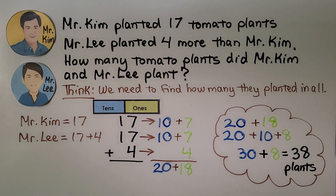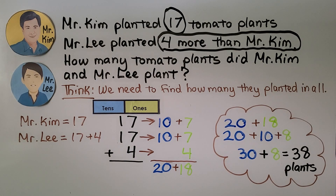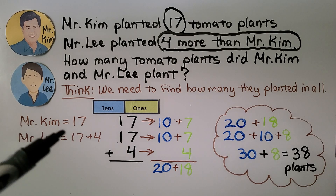Word problem: Mr. Kim planted 17 tomato plants. Mr. Lee planted four more than Mr. Kim. How many tomato plants did Mr. Kim and Mr. Lee plant? We need to find how many they planted in all. We circle the important information: Mr. Kim planted 17, and Mr. Lee planted four more than Mr. Kim.